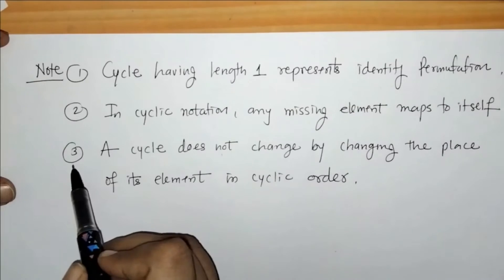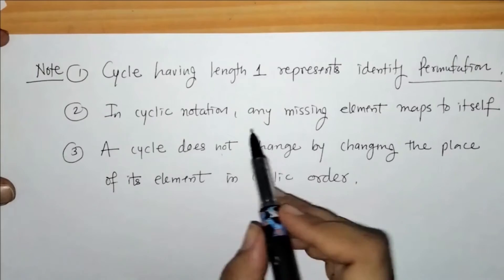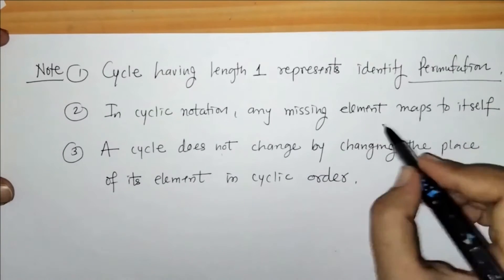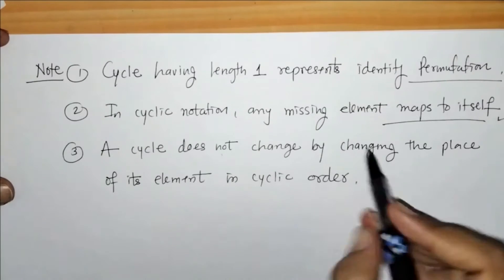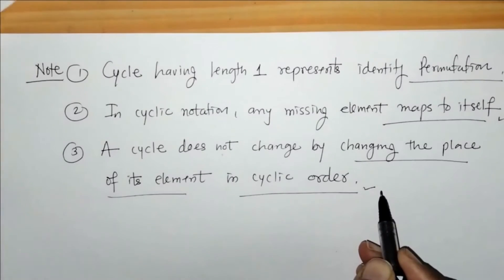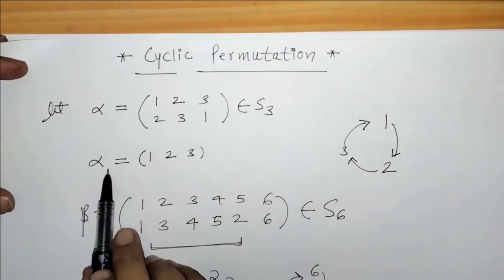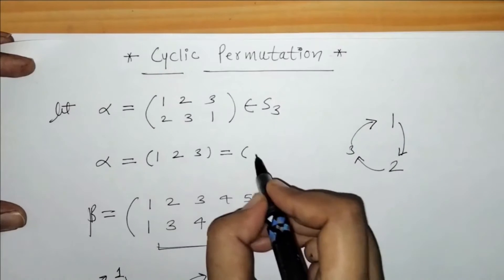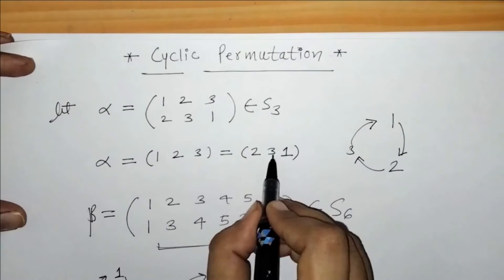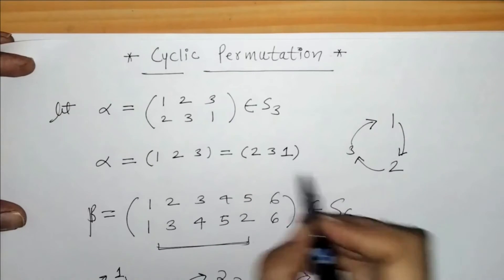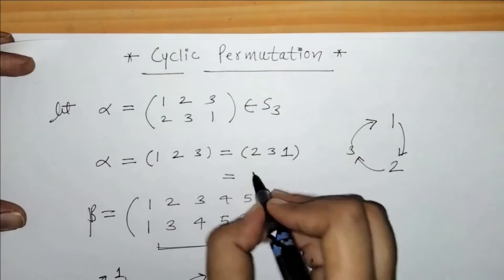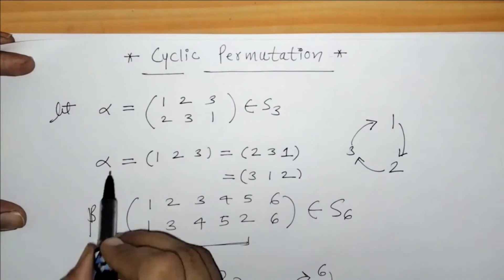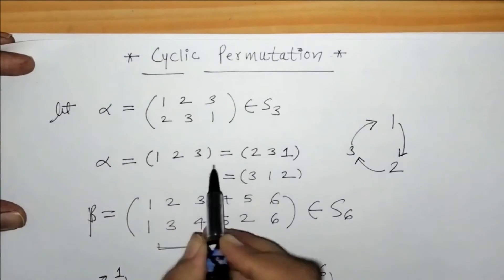Yes, here we have to remember these points: a cycle having length 1 represents the identity permutation. If any element is missing in cyclic notation, that missing element maps to itself. Also, a cycle does not change by changing the position of its elements in cyclic order. That means if alpha is the cycle (1, 2, 3), we can also write it as (2, 3, 1) — meaning 2 maps to 3, 3 maps to 1, 1 maps to 2 — or as (3, 1, 2) — 3 maps to 1, 1 maps to 2, 2 maps to 3.